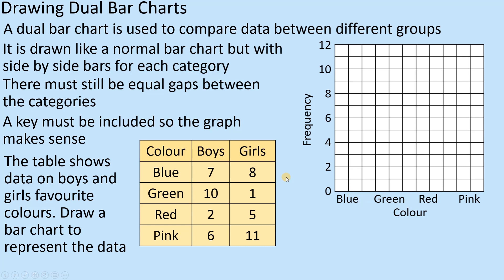We need to put in a bar for boys and a bar for girls. Looking at the blue category - not being stereotypical, the bar at seven represents boys. We need a different colour for girls, so we're going orange for girls, and that bar is eight high. Those two bars next to each other under the category blue are your dual bar chart.